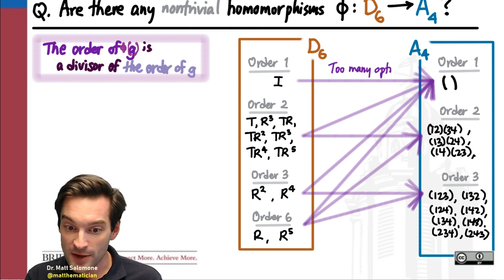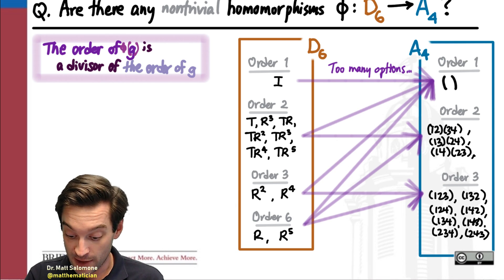So this narrows the universe of possibilities a little bit, but there's still way too many options. There's too much for me to choose from here to be able to determine for sure whether there is a non-trivial homomorphism,